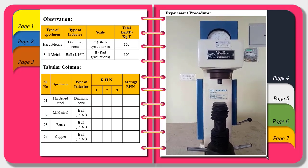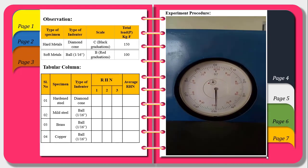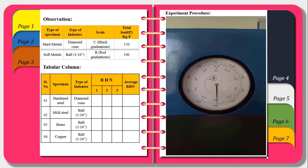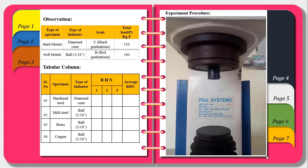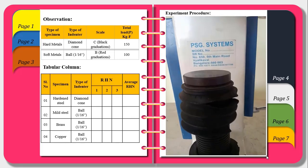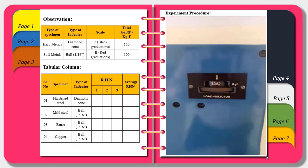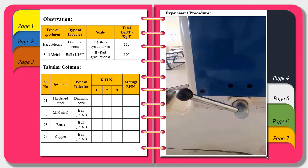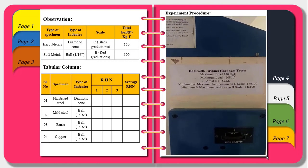In this experimental setup we can observe the dial indicator having red and black graduations and a small indicator with a red point. Moving on we can notice indenter holder, anvil and the load selector knob. Below that we can observe the loading lever. And also in the experiment we can observe the specifications.